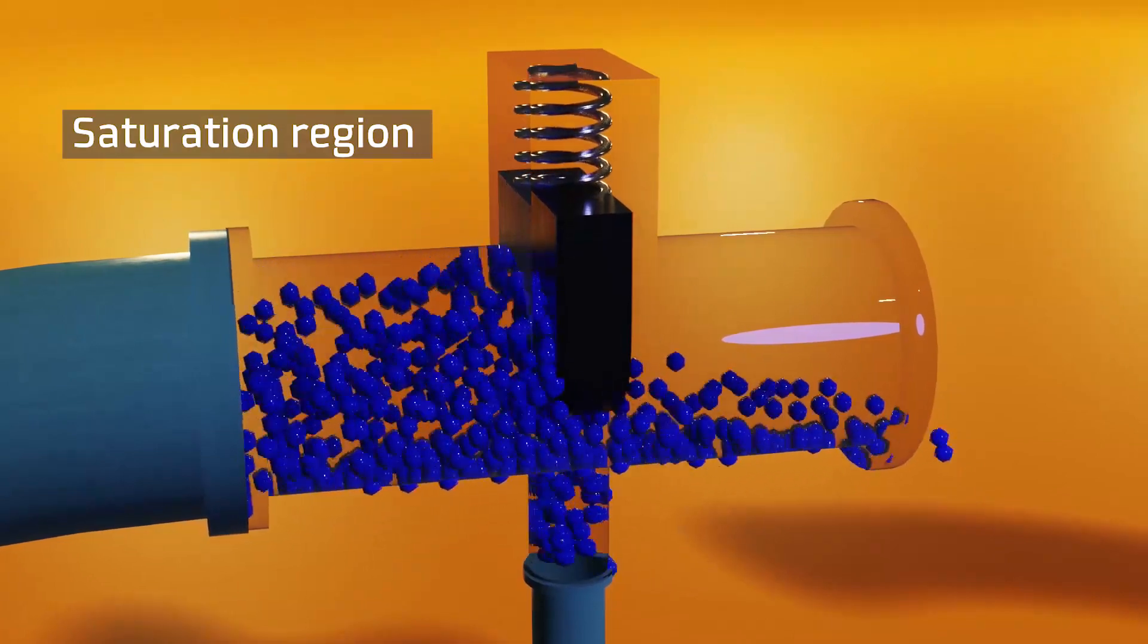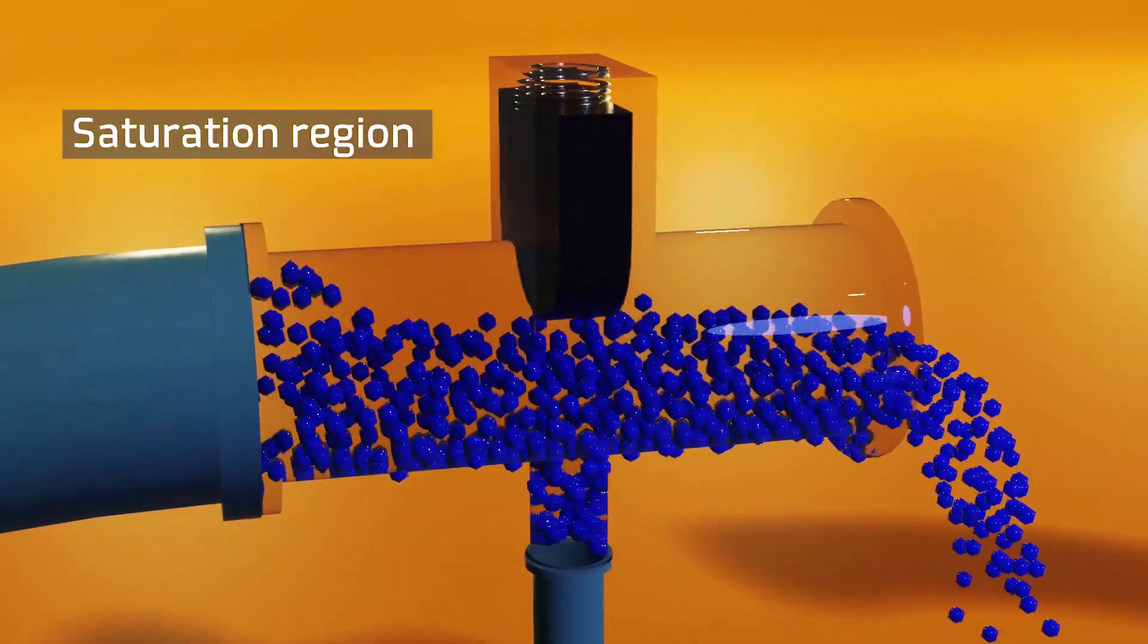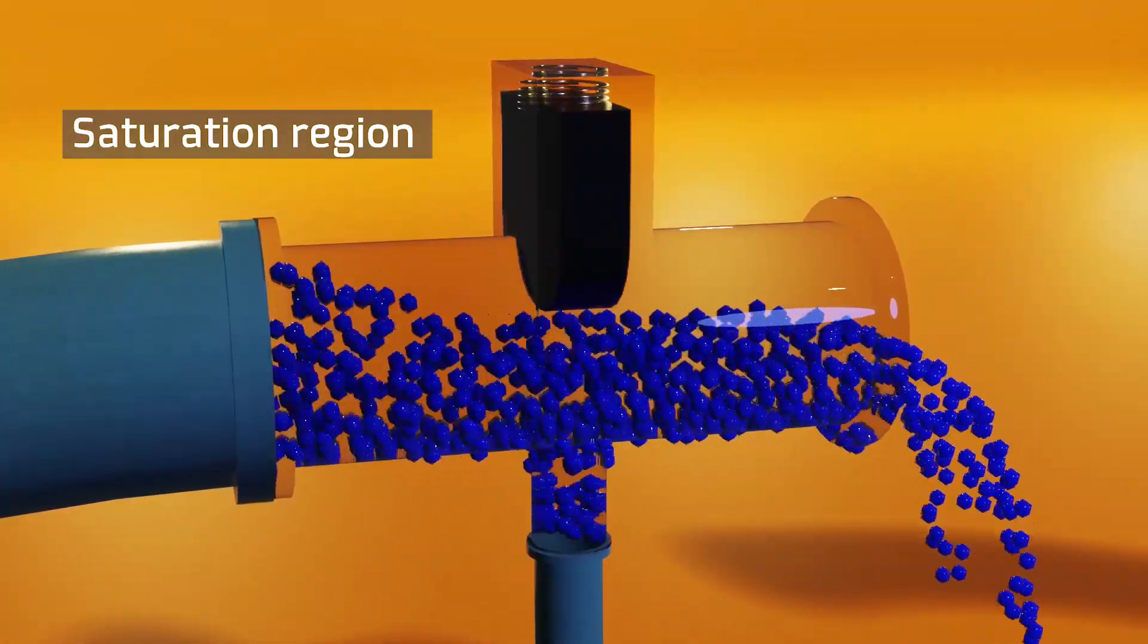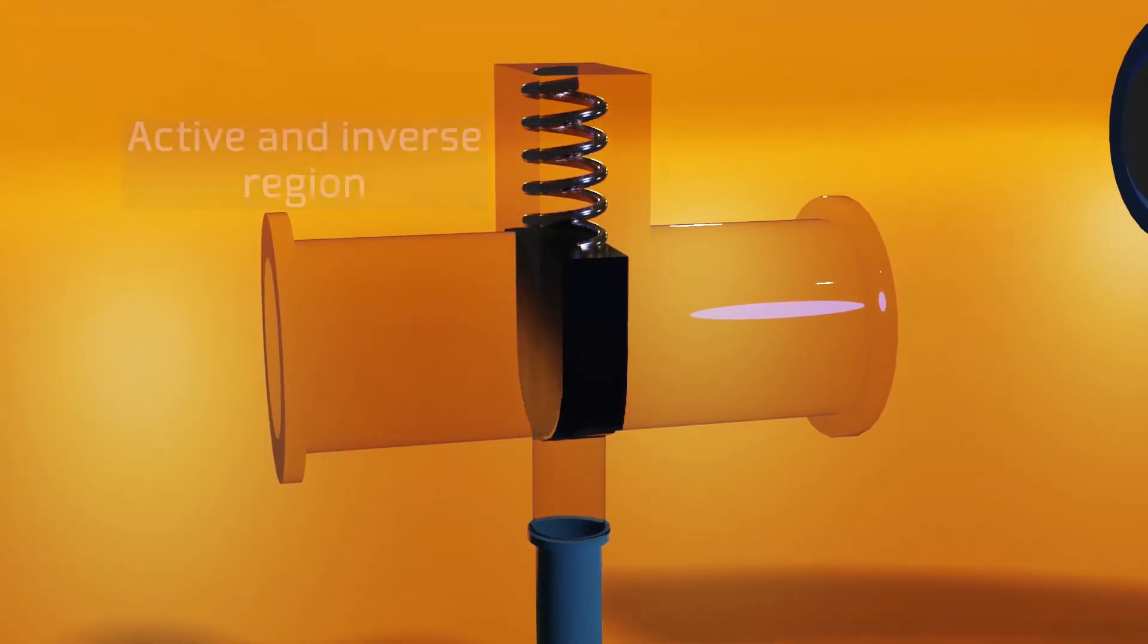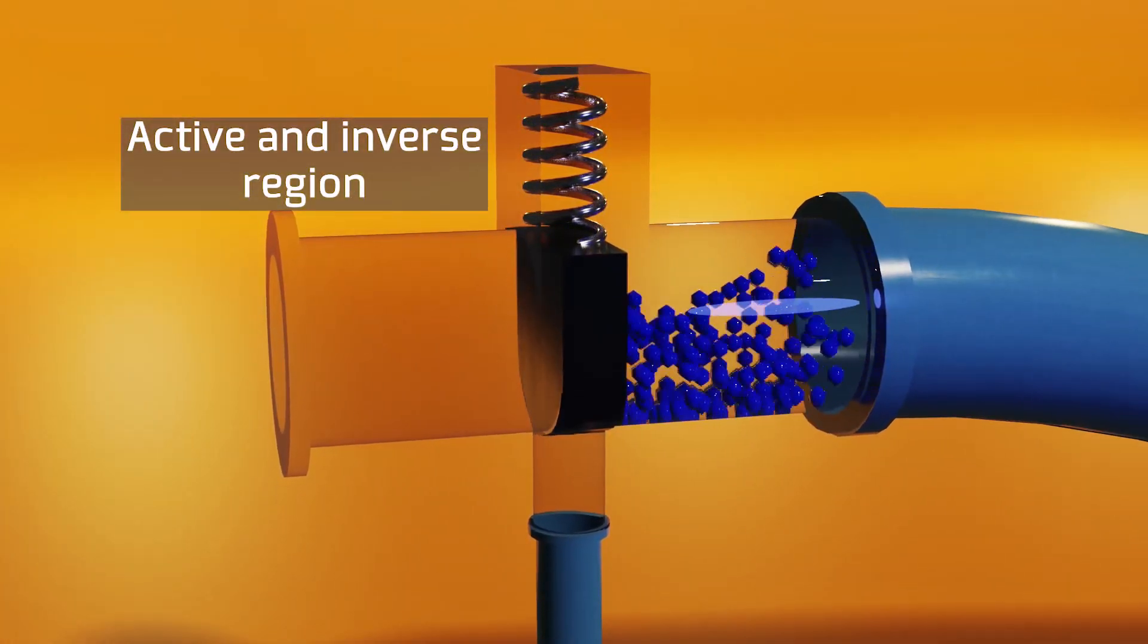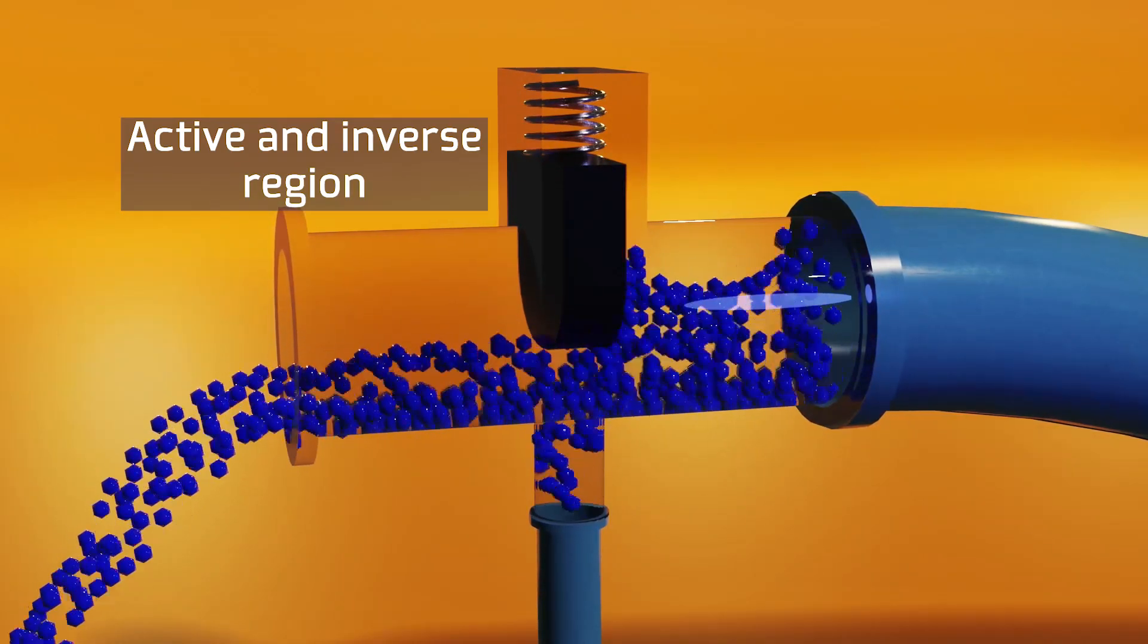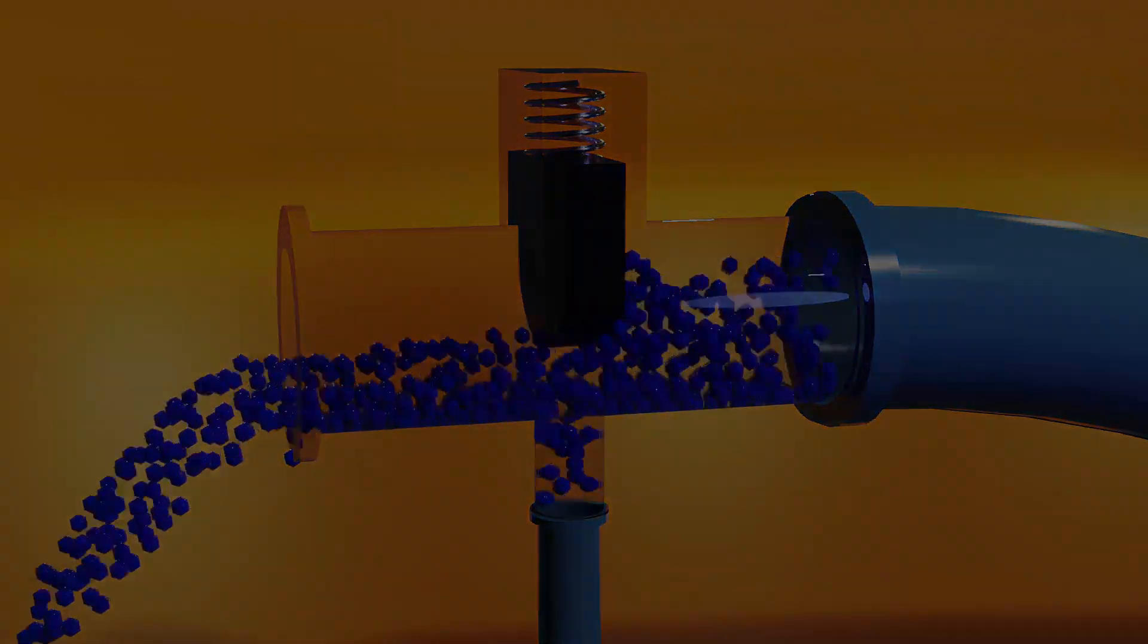The third case occurs when the base voltage is too high and therefore the transistor begins to act as a simple cable, letting all the current from the collector to the emitter and losing the amplification quality of the active region. And finally, the fourth case is the inverse active region that acts in the same way as the direct active region but transmitting the current in the other direction. This occurs because a transistor is symmetric and therefore can be used in both directions.